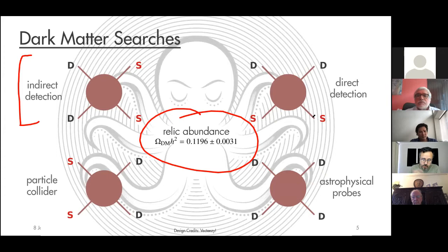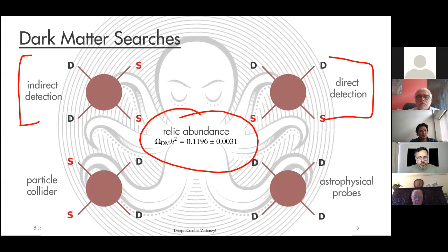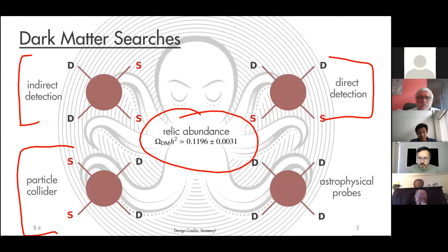At particle colliders, we may produce dark matter but not directly observe it. However, we can observe associated particles — for instance, in supersymmetry, the neutralino is a dark matter candidate that wouldn't be seen directly but would appear via charged partners. There are also astrophysical probes involving dark matter self-interaction, which can modify the shape of dark matter halos.